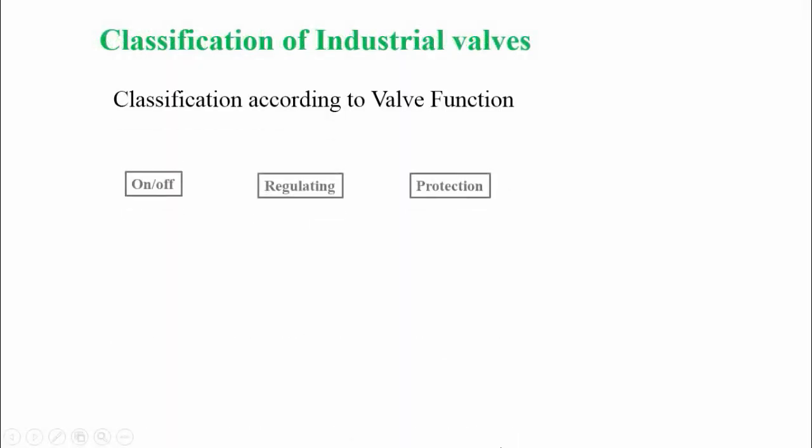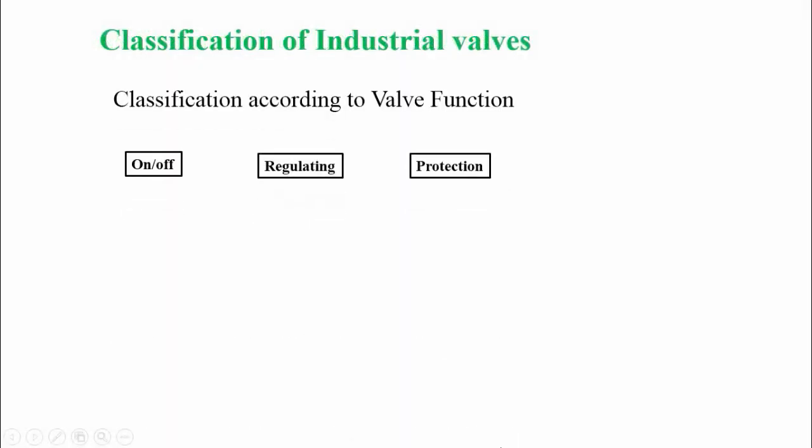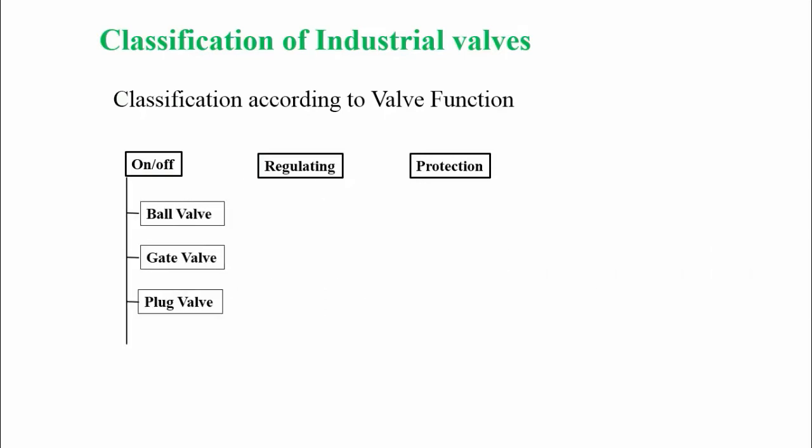Now let's see the valve classification according to their function. According to their function, all types of valves are classified into three main subcategories: on-off valve, regulating valve, and protection valve. On-off valves are designed to shut off and open fully, with no ability to regulate effectively through the range of travel. In the category of on-off valves we find ball valve, gate valve, plug valve, and also the diaphragm valve.